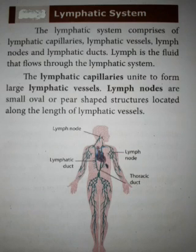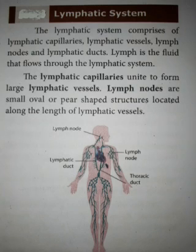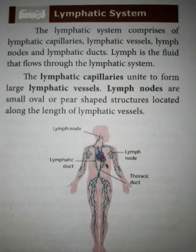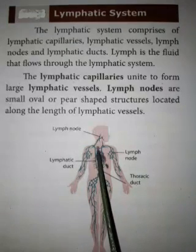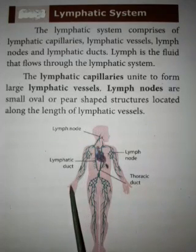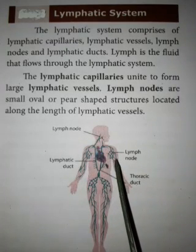Lymph is a fluid which flows through the lymphatic system. The lymphatic system includes lymphatic capillaries, lymphatic vessels, lymph nodes, and lymphatic ducts. This picture shows the lymphatic system — the green structures represent the lymphatics.